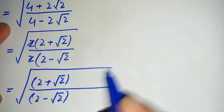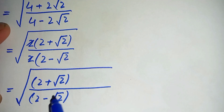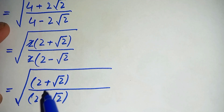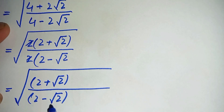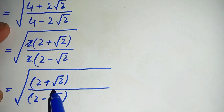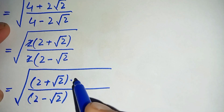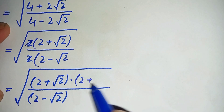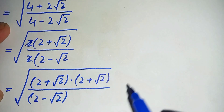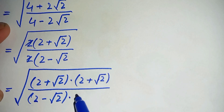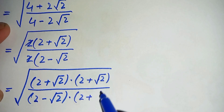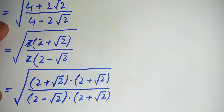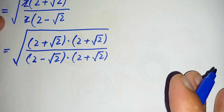Now we will rationalize this expression by multiplying both the numerator and denominator by the conjugate of the denominator. The conjugate of 2 minus square root of 2 is 2 plus square root of 2, so we multiply both numerator and denominator by 2 plus square root of 2.